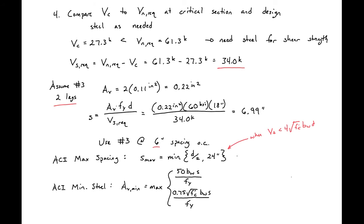We next check ACI limits for maximum spacing and minimum steel. For maximum spacing, when VS < 4√(f'c) × bw × d, the maximum spacing is the lesser of d/2 and 24 inches. Our d/2 = 9 inches, which is less than 24 inches, so the maximum spacing is 9 inches. Our provided spacing of 6 inches is less than 9 inches, so we're okay.